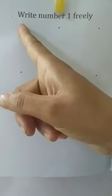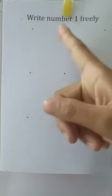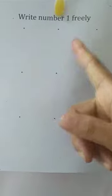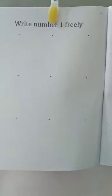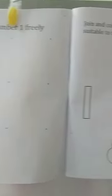You write number 1. Start from the dot and write number 1. Write number 1 like this. Okay? And you finish the number. Write nicely. Good. And the other page.